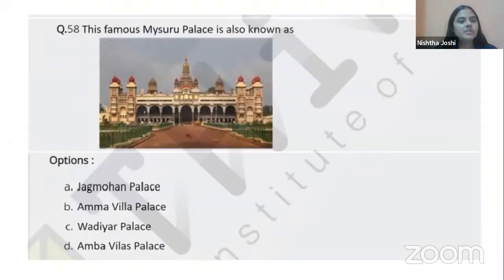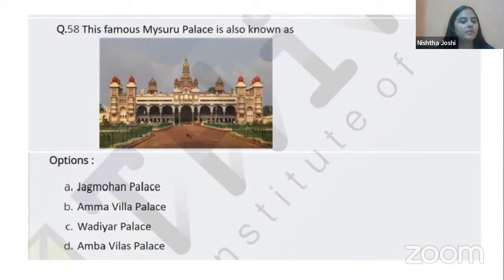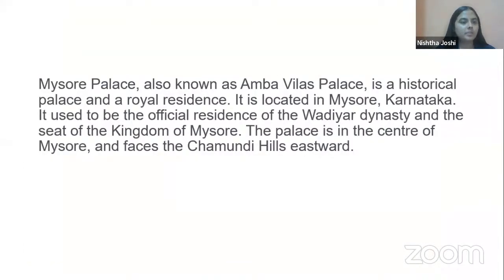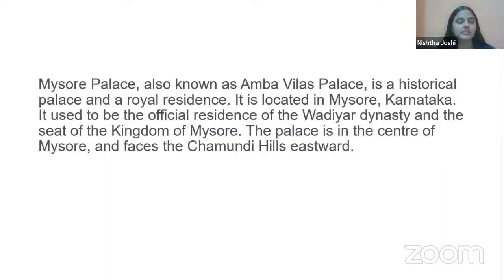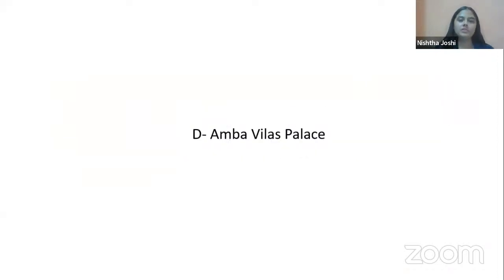The famous Mysore Palace is also known as what? The options are Jagmohan Palace, Amma Vilas Palace, Vadiar Palace, or Amba Vilas Palace. The Mysore Palace is also known as Amba Vilas Palace — a historical palace and royal residence in Mysore, Karnataka. It was the official residence of the Wadiyar dynasty and the seat of the Kingdom of Mysore, facing the Chamundi Hills to its east. The correct answer is option D, Amba Vilas Palace.